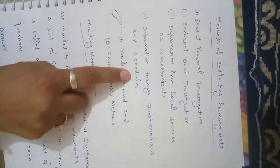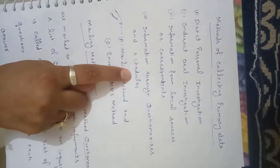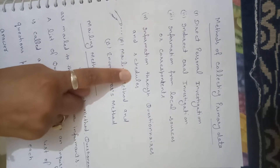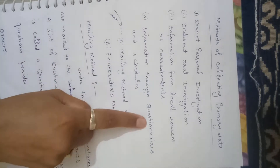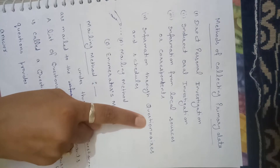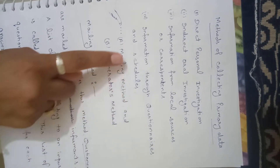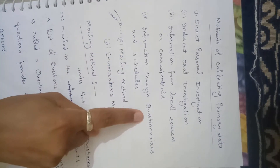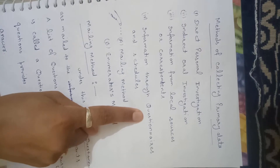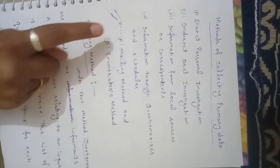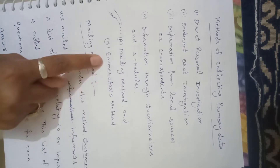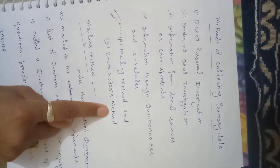The next method is information through questionnaires and schedules. Under this method, the investigator prepares a questionnaire and sends information in two ways: one is the mailing method and another is the enumerator method.